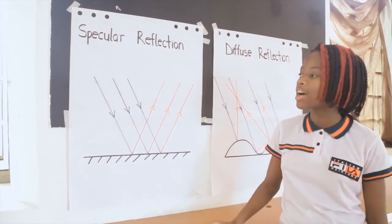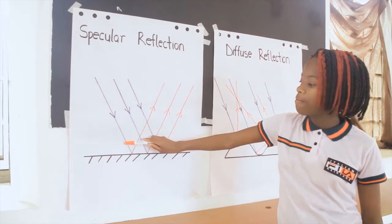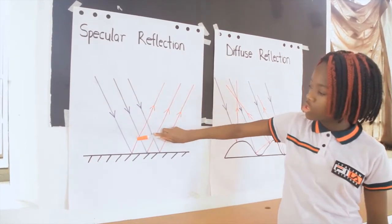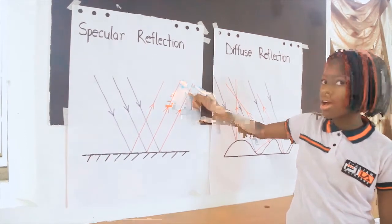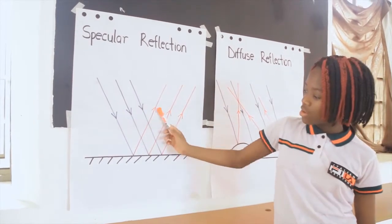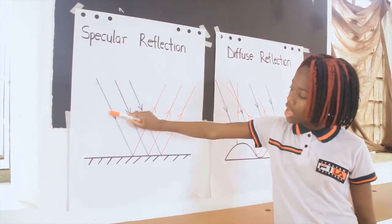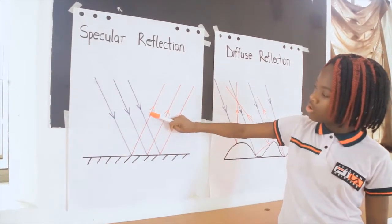In specular reflection, the light will reflect at the same angle as it hits the smooth, shiny surface. Specular reflection is from a smooth surface at a definite angle.